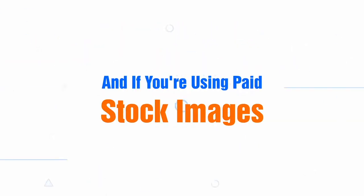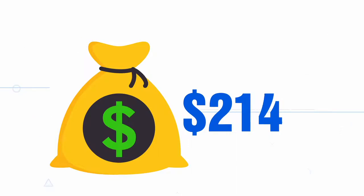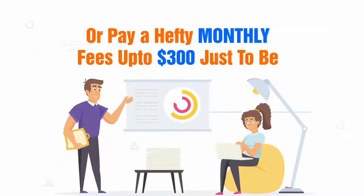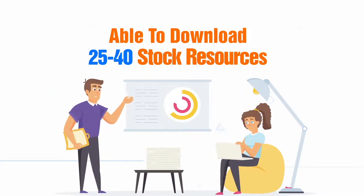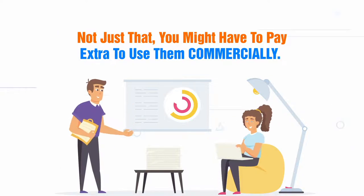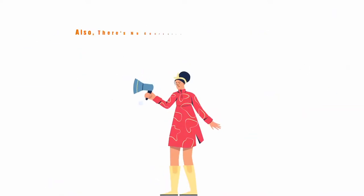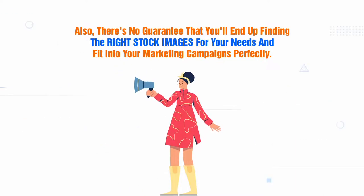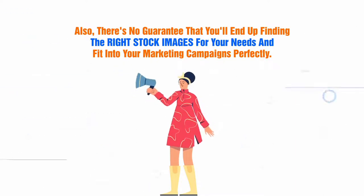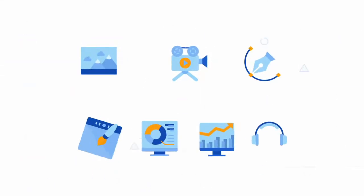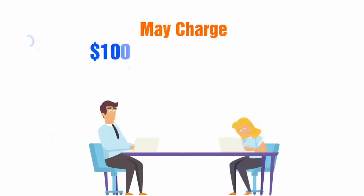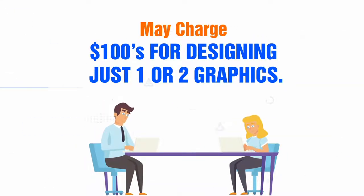And if you're using paid stock images from Shutterstock or iStock, you'll end up paying $150 to $500 for a single stock resource, or pay hefty monthly fees up to $300 just to be able to download 25 to 40 stock resources. Not just that, you might have to pay extra to use them commercially. Also, there's no guarantee you'll end up finding the right stock images for your needs. And if you need specific types like vectors, illustrations, infographics, charts, or music tracks, you'll need to hire a designer that may charge you hundreds of dollars for just one or two graphics.